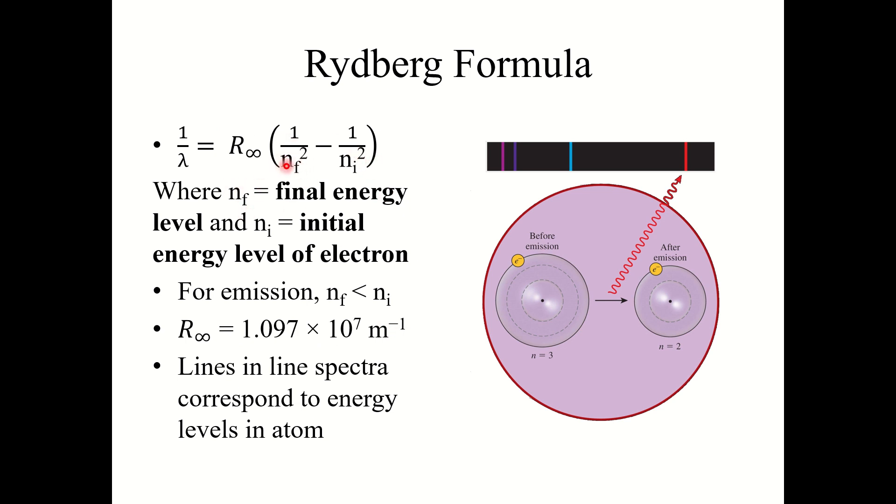nf and ni represent energy levels. n sub f is the final energy level, n sub i is the initial energy level. Lines in the line spectra correspond to energy levels in the atom. This is why every element has a unique emission spectrum or unique line spectrum, because they all have slightly different energy levels, which means they all give off slightly different photons of light.